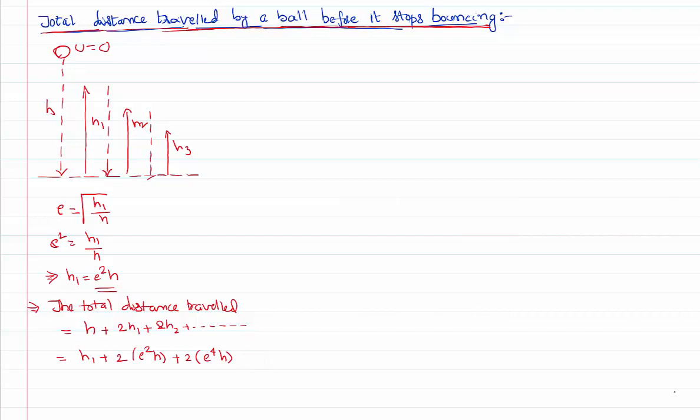As we have already explained, h1 is e square into h, h2 is e power 4 into h as we have proved in the previous video lesson. Height bounced back by the body after n number of collisions is e power 2n into h.